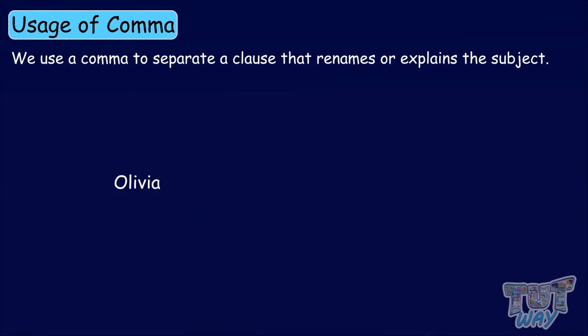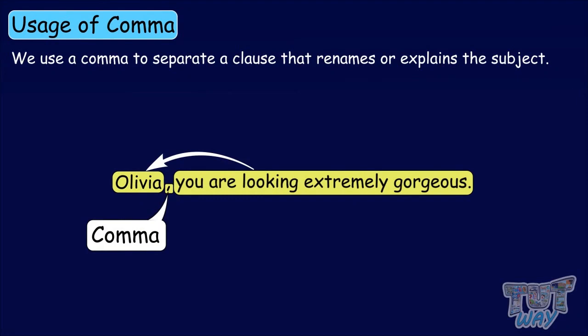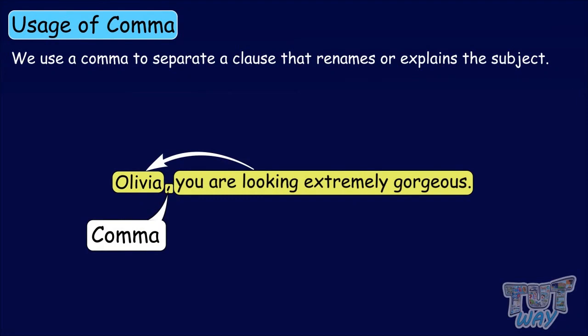Olivia, you are looking extremely gorgeous. Here, the sentence is beginning with the name, separated by a comma, and the next whole part of the sentence explains about Olivia. So it's separated by a comma: Olivia, you are looking extremely gorgeous.